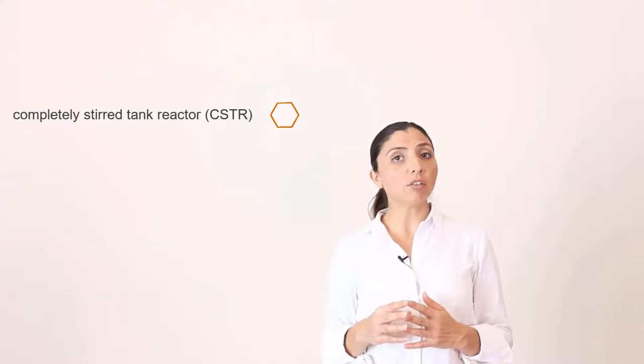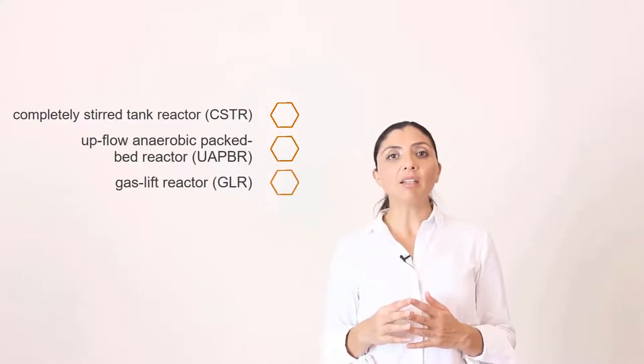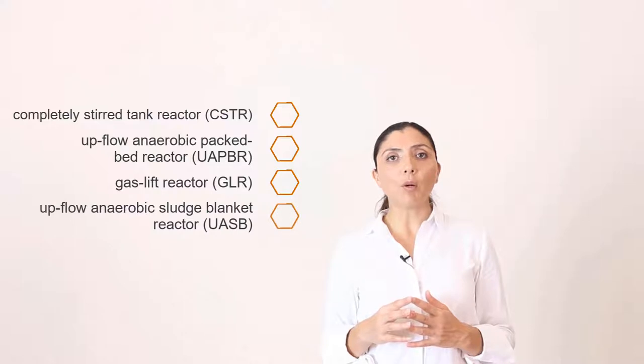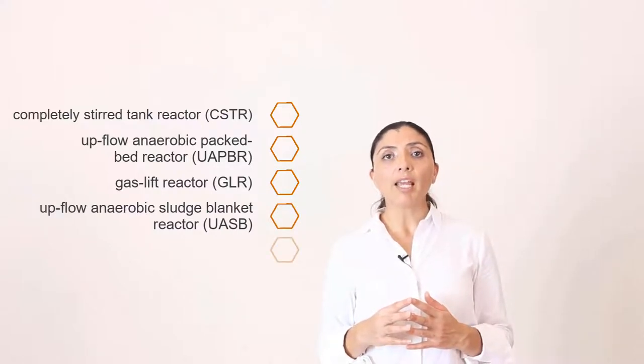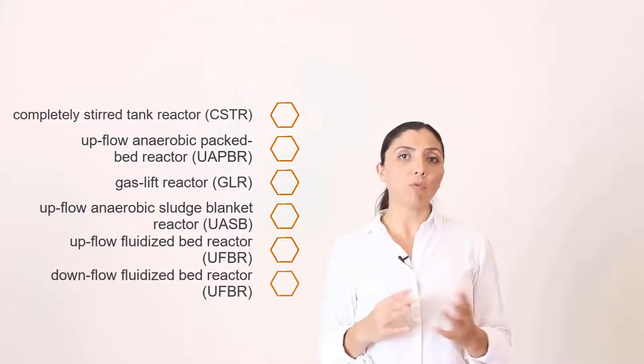Over the last years, different bioreactors have been studied for sulfate reduction and treatment of metal-containing waste streams. This has been done in single stage or multi-stage processes. These bioreactors include completely stirred tank reactor, upflow anaerobic packed bed reactor, gas lift reactor, upflow anaerobic sludge blanket reactor, upflow fluidized bed reactor, and downflow as well.